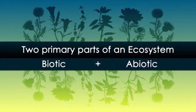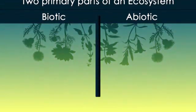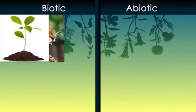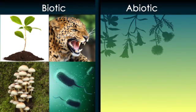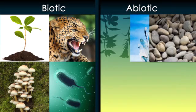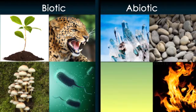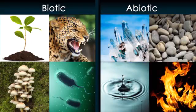There are two primary parts of an ecosystem. The biotic part is made of all the living things, like plants and animals, fungi and bacteria and viruses. The abiotic part is made of non-living things, like rocks and minerals, water and energy.